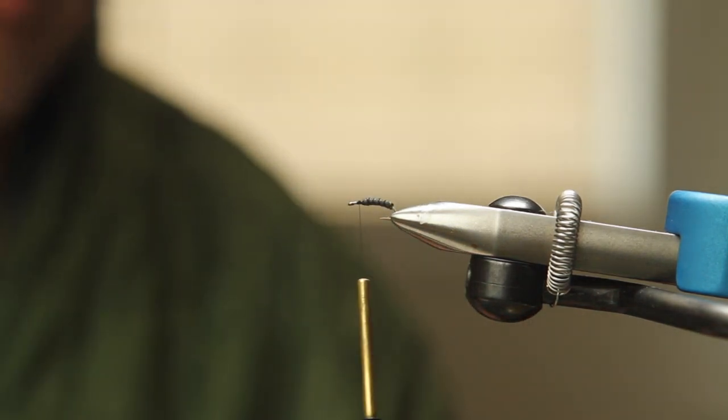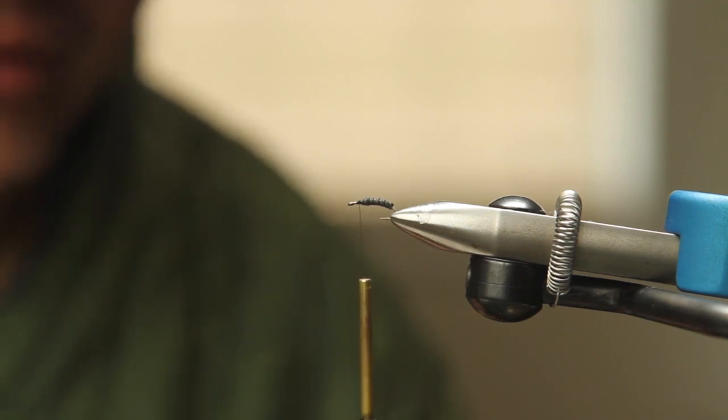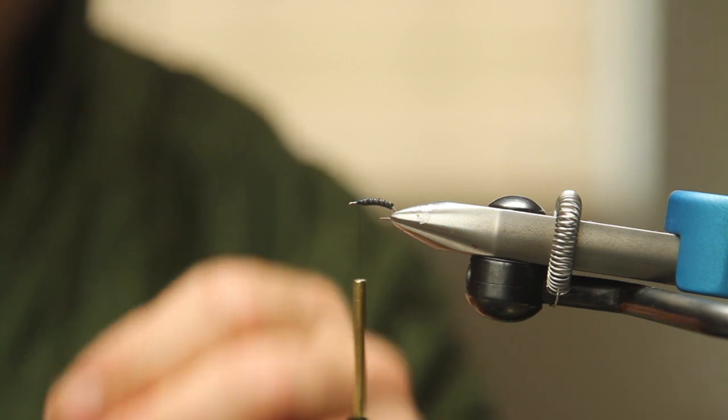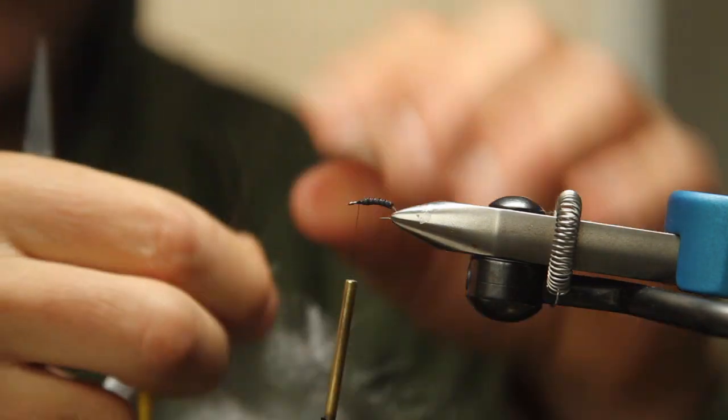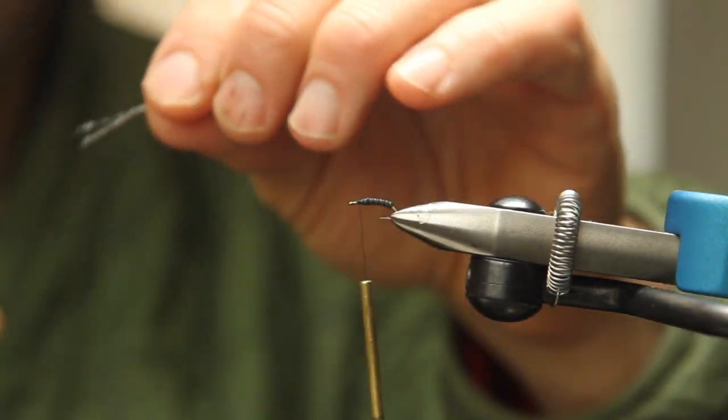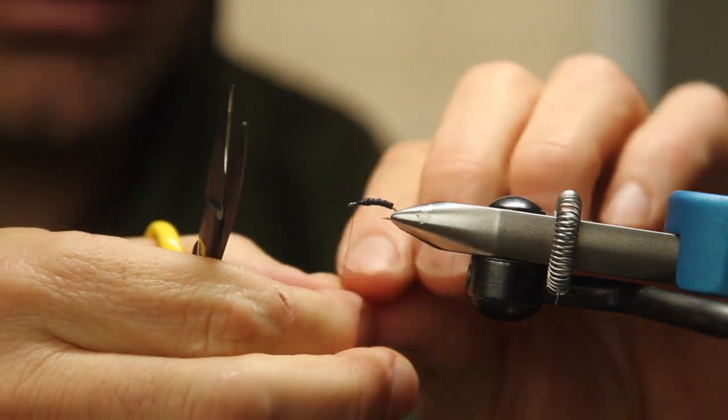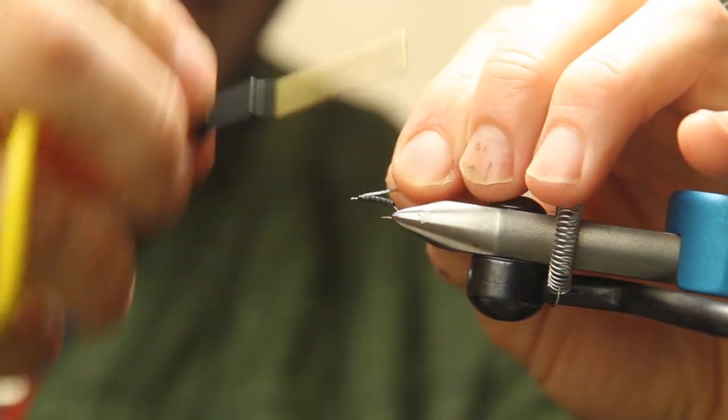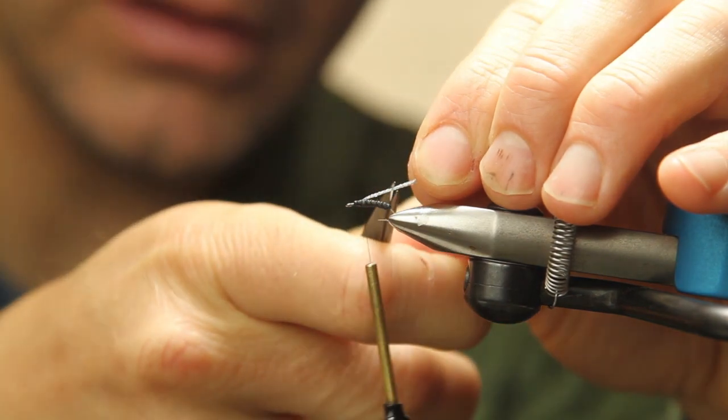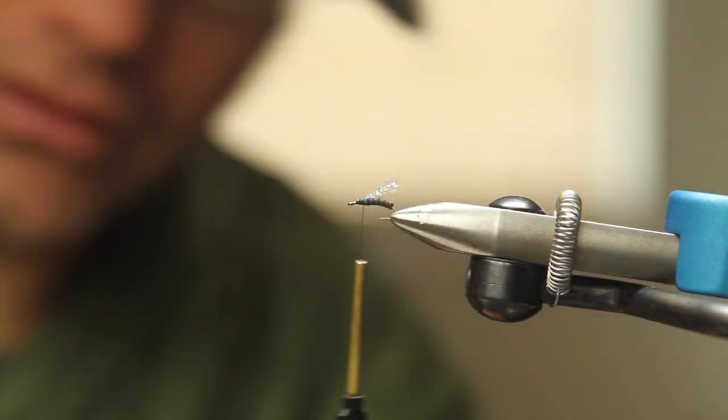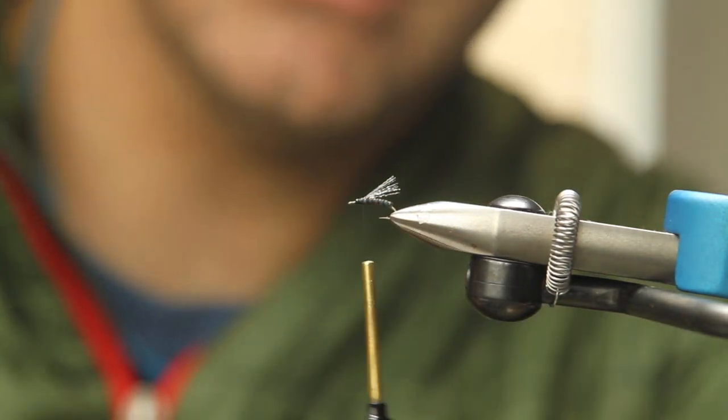Now we want to throw on an underwing to make this thing a little bit more attractive. Come in here and grab some of this sparkle organza. Fray off a little bit there. Grab a few strands. Trim them off. Fold them over your thread. Wrap them right to the top of the hook shank like so. And trim. That's just going to give you a nice sparkly underwing. Make it stand out.